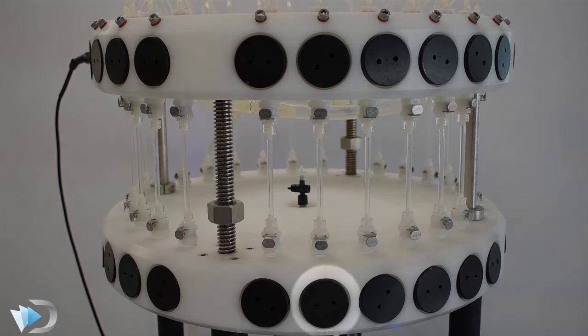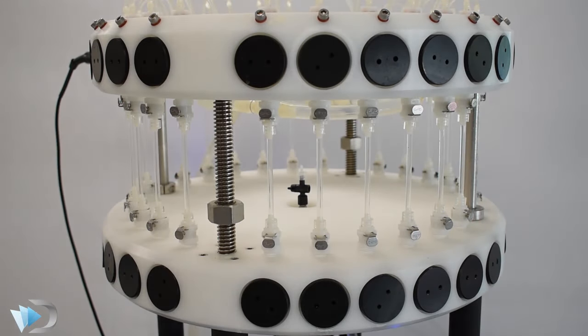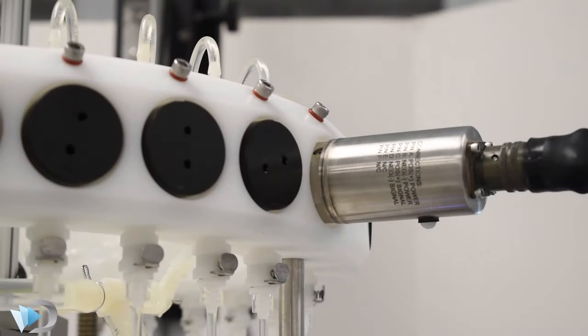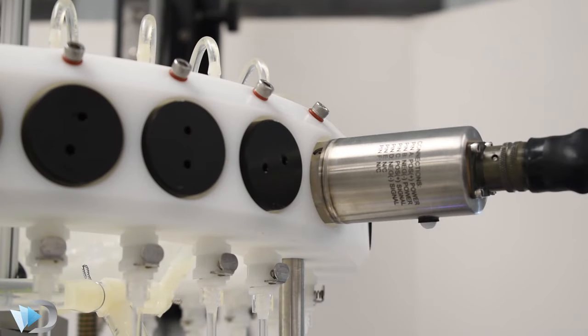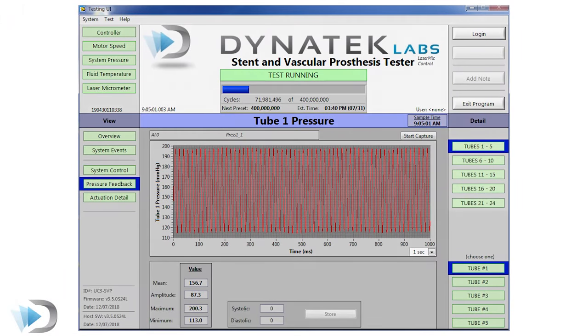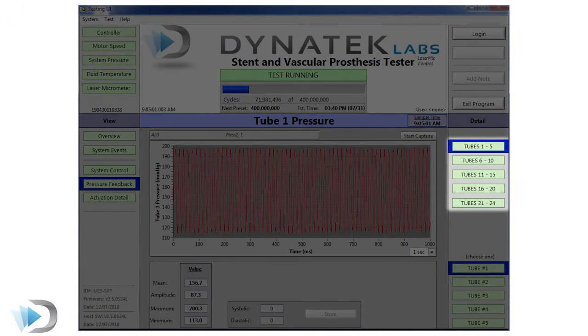For pressure control, ports are located at the proximal and distal positions of each sample. Commercially available pressure transducers are placed on each port. Then, Dynatech's UST software monitors up to 24 transducers simultaneously.